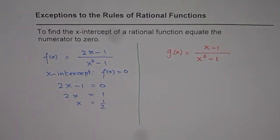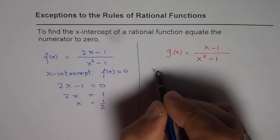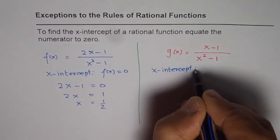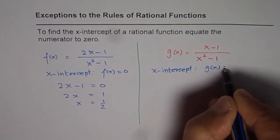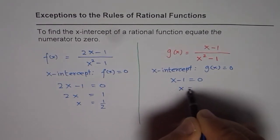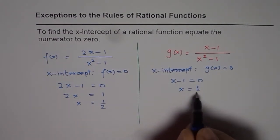if you do the same calculations for x-intercept, that is, say, g(x) should be equal to 0 and if you equate x minus 1 to 0, you get x equals 1. Remember, x equals 1 is not the x-intercept.